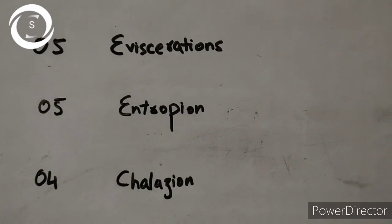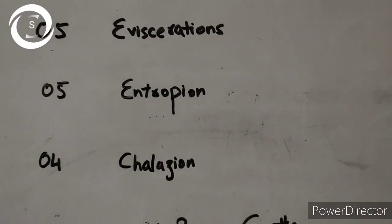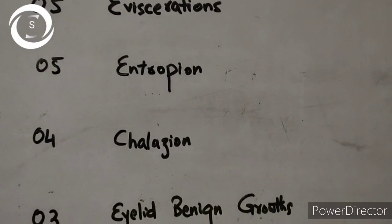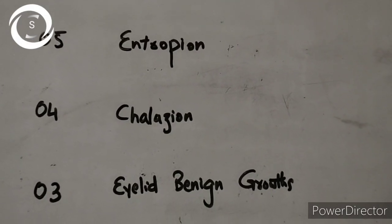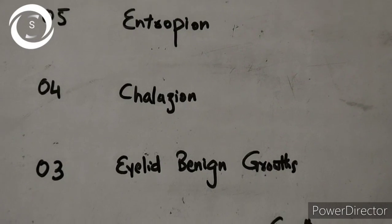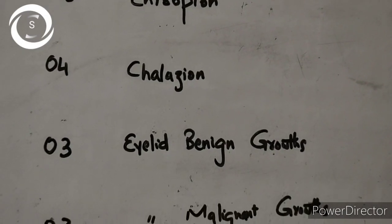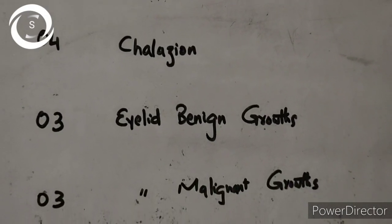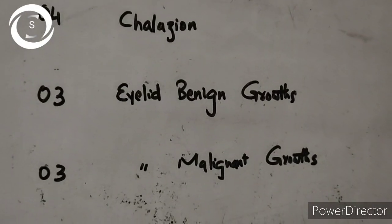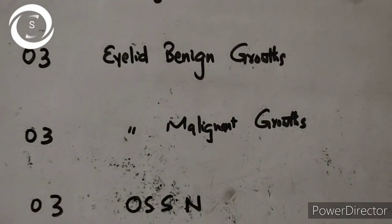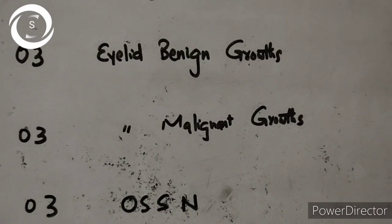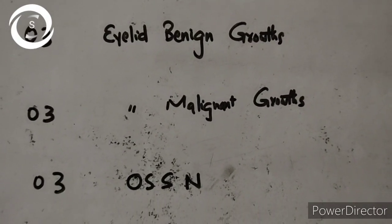Then 4 incisional curettage of chalazions, 3 eyelid benign growths - keratoacanthomas and some other cystic cysts of Moll's. 3 malignant eyelid growths - 1 sebaceous gland carcinoma, 1 basal cell carcinoma, and 1 squamous cell carcinoma.